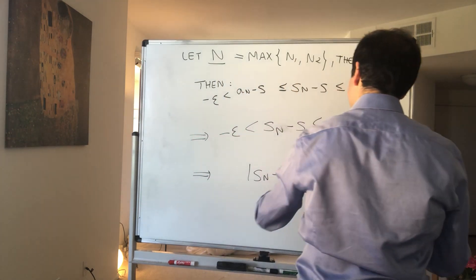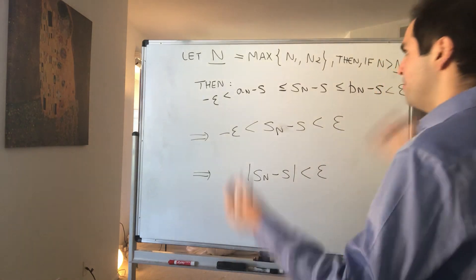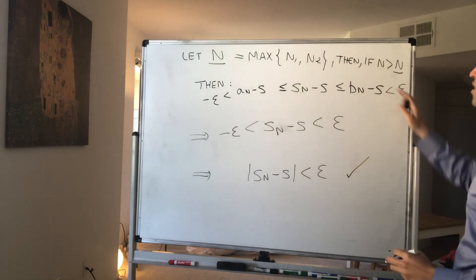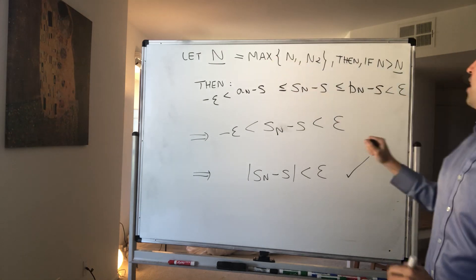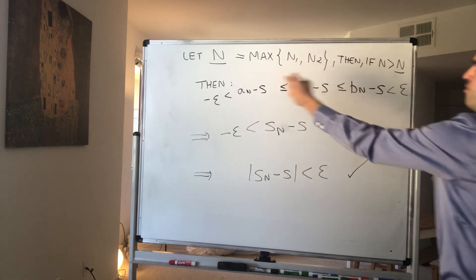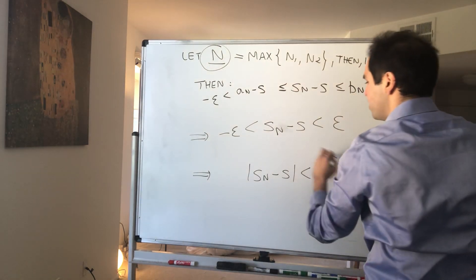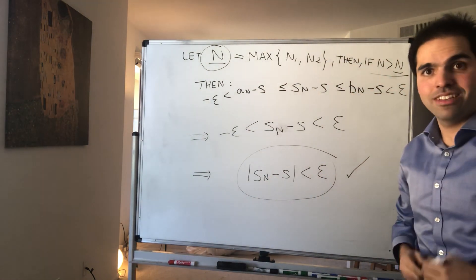because you needed to find some capital N such that if n is bigger than capital N, then s_n minus s is less than epsilon. And therefore, the limit as n goes to infinity of s_n is just s.